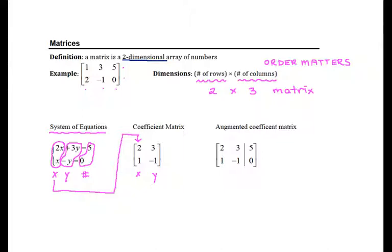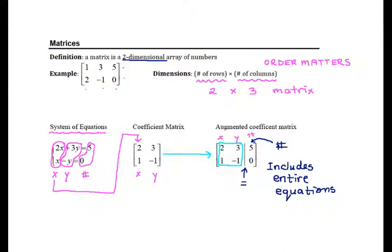The augmented coefficient matrix starts with the coefficient matrix on one side. Then it has a dividing line that corresponds to the equal sign in the equations. And on the right of that line we have the numbers from the right-hand side of the equations. So the augmented coefficient matrix summarizes the entire equation, whereas the coefficient matrix only has a portion of the equations. To make sense of an augmented coefficient matrix, we would think of the first column corresponding to generally the variable x, the next column corresponding to y, the line corresponding to the equal sign, and on the right we would have the numbers.